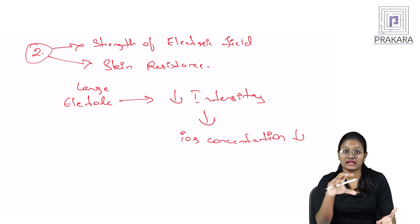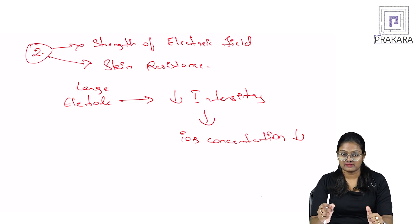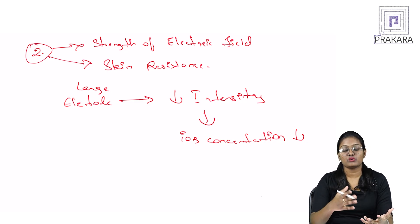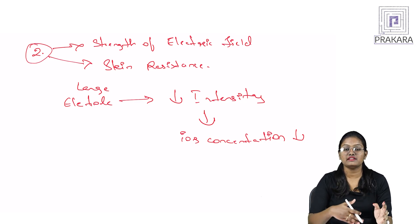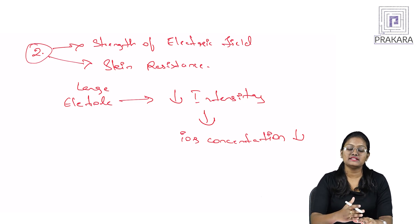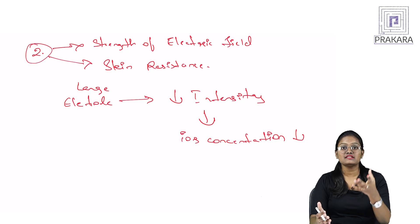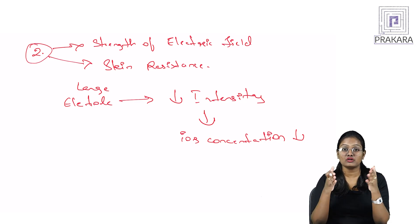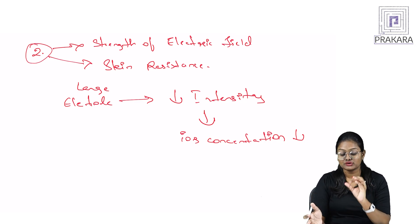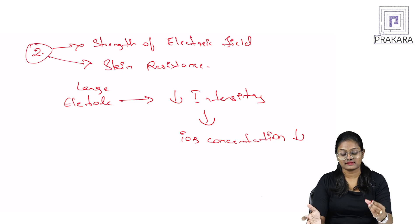The second factor is skin resistance. Skin naturally offers resistance, so to decrease it you must clean the treatment area — any dust particles present will add resistance. You also need to remove hair follicles from the area, because they also produce resistance. When resistance increases, ions cannot transfer into the body effectively. So always check both the strength of the electric field and the skin resistance when performing iontophoresis.